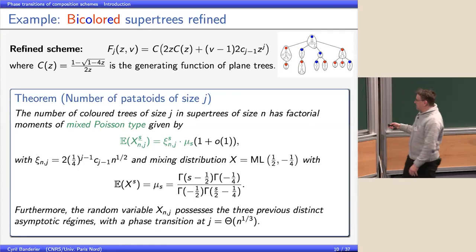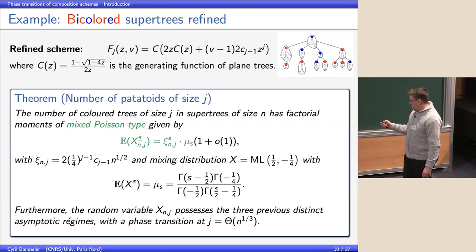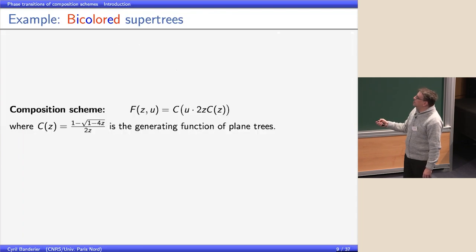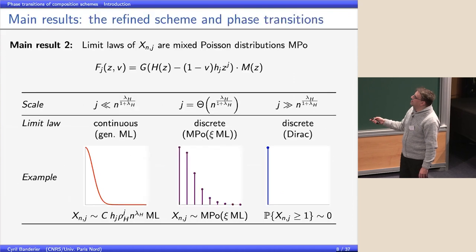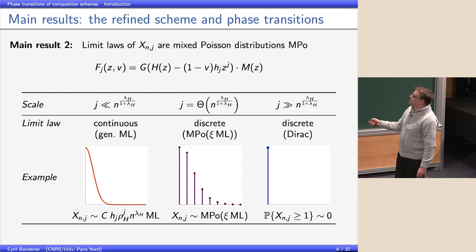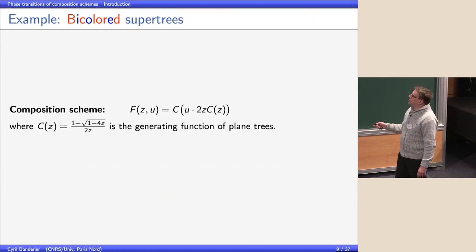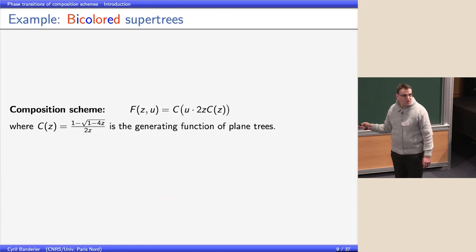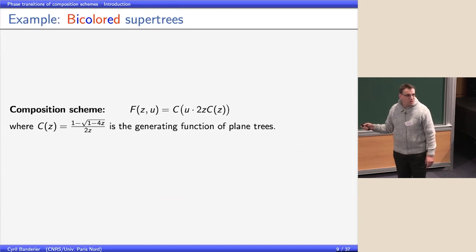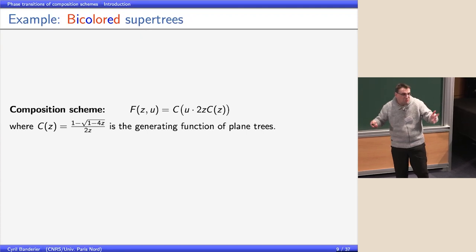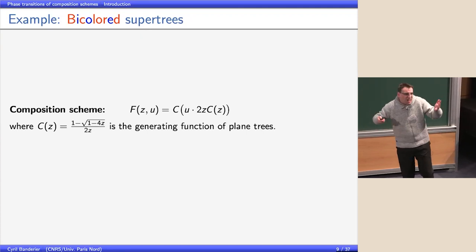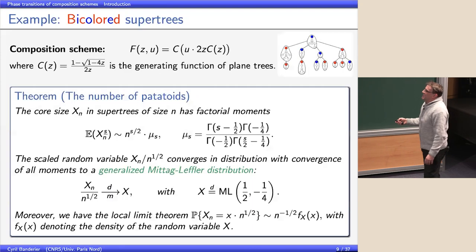By the double phase transition I mean: in this window you get mixed Poisson; before the window it is Mittag-Leffler; after it is discrete. If you have a single peak you have a distribution that depends on where you are — it could be Dirac in the discrete case. So the behavior changes qualitatively depending on the regime.